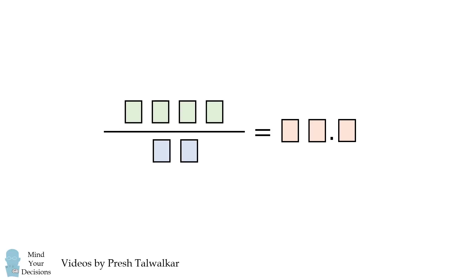Mind your decisions, I'm Presh Talwalkar. A four-digit number divided by a two-digit number equals two digits and a digit after the decimal point. Some countries use the notation of a comma. In this video, I will use a decimal point. What could these numbers be?